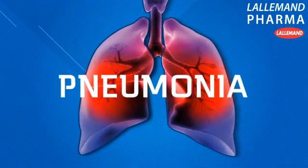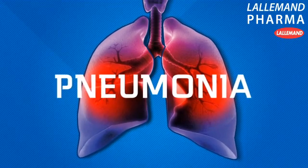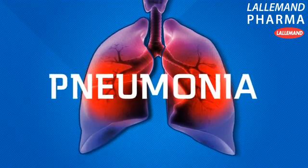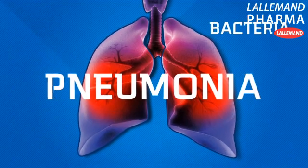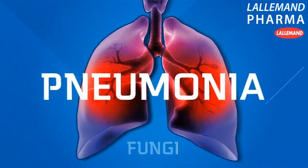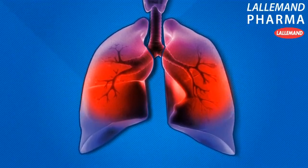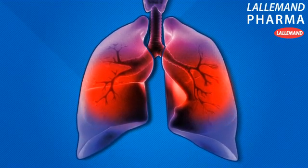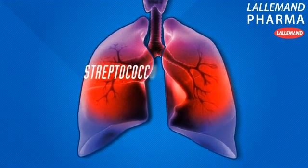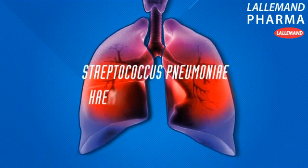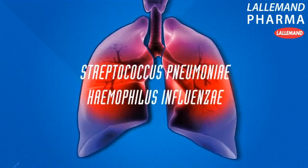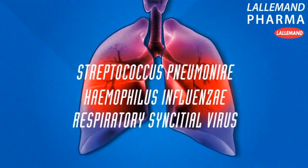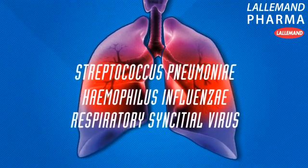Pneumonia is an acute infection of the lung caused by a number of infectious agents, including viruses, bacteria and fungi. The main etiologies, representing 50% of cases, are the bacteria Streptococcus pneumoniae and Haemophilus influenzae. The main viral cause is respiratory syncytial virus, RSV.